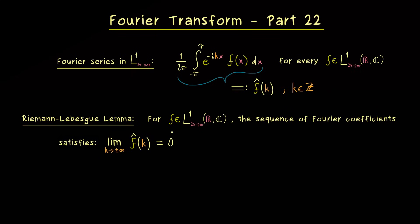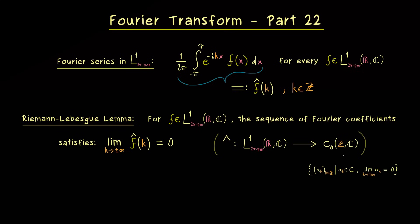So eventually, measured with the absolute value, the sequence becomes smaller and smaller. We cannot say how fast it goes to zero, but at least we know it goes to zero. This means the linear map denoted by a hat goes from L1 into the space of convergent sequences with limit zero, and the common notation for this space is simply c with index zero.